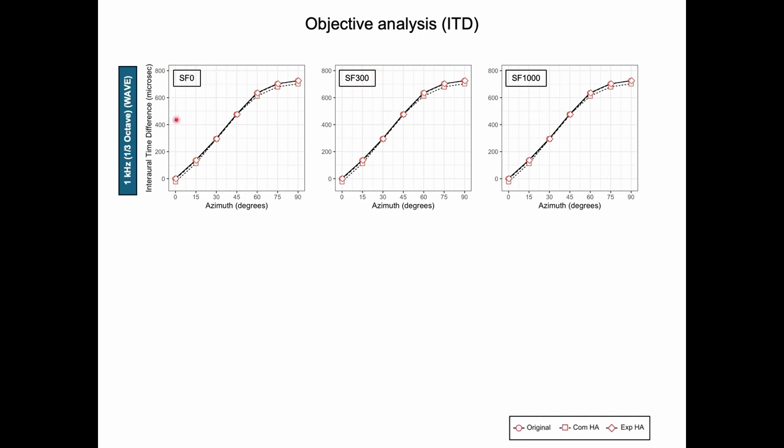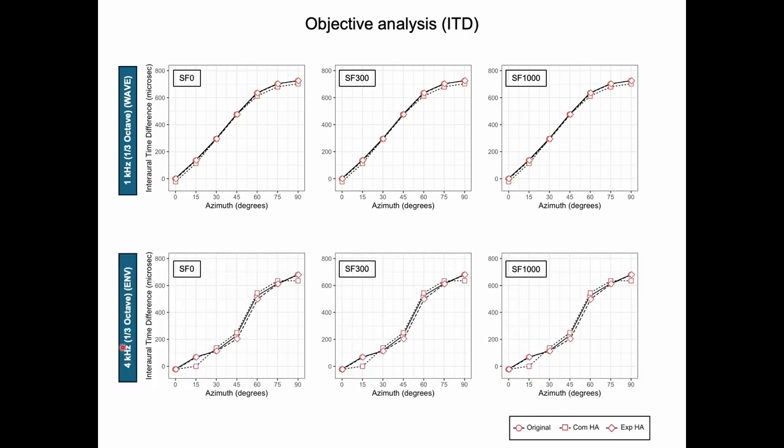As you can see, the broadband and original signal results are close to each other, but the commercial hearing aid is not. This is the same across the broadband filtering conditions. This is the waveform ITD for 1 kHz one-third octave filtered signal, and this is envelope ITD for 4 kHz.